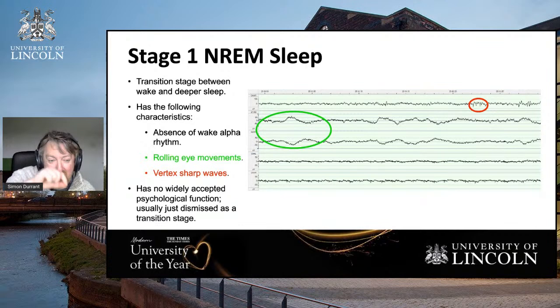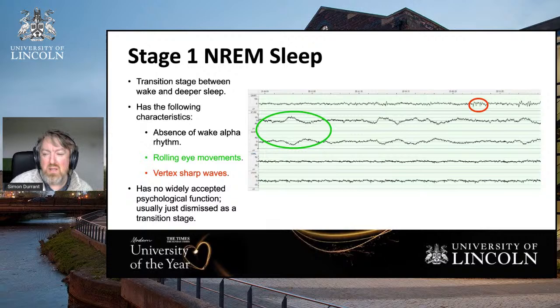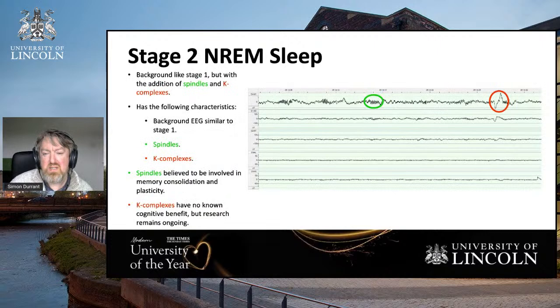There are also these little things called vertex sharp waves — short bursts of electrical activity, relatively low in amplitude, so not that many neurons taking part in them. They're quite rapid and they're characteristic of Stage 1 sleep. Stage 1 sleep is only about five percent of the night, so it's relatively unimportant — it tends to be dismissed as a transition stage.